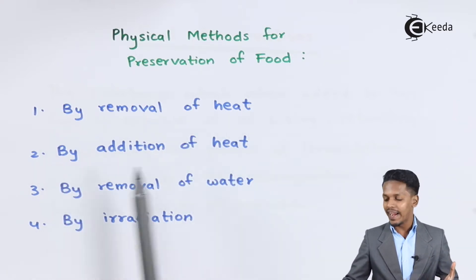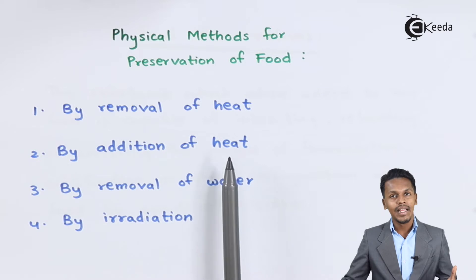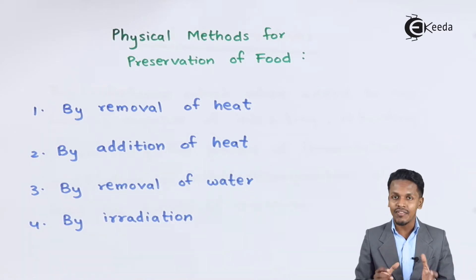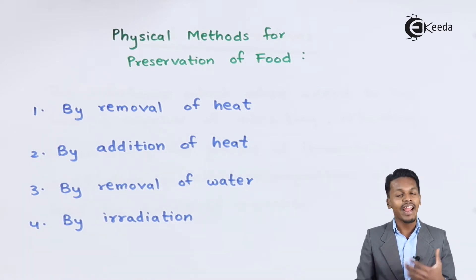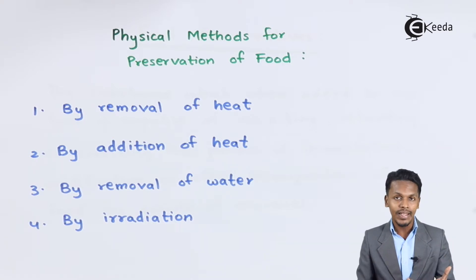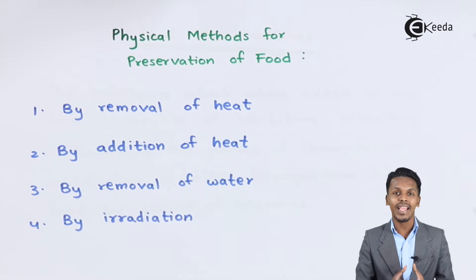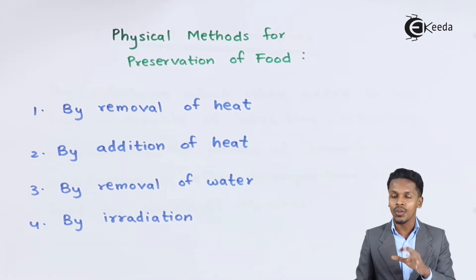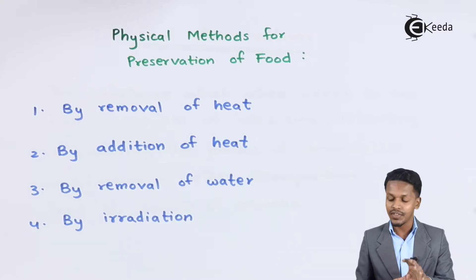The next method is by addition of heat. By addition of heat, we increase the temperature of the food. Because at high temperature, there are certain microbes that cannot survive. So we can kill those microbes and stop their growth on the food, and that is how we can preserve the food.